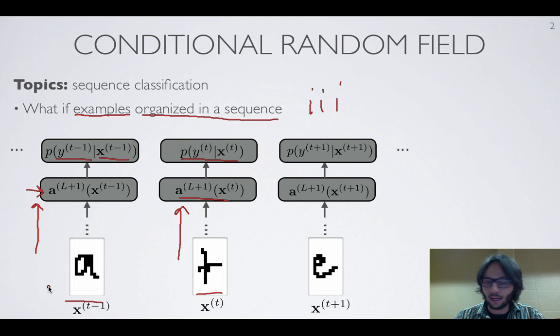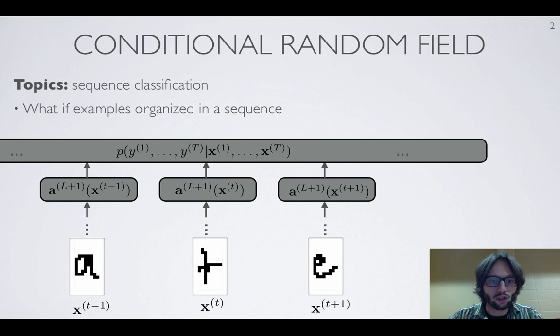That's the idea behind conditional random fields. If we have a sequence of observations, in this case a sequence of images that corresponds to all the characters in a word...